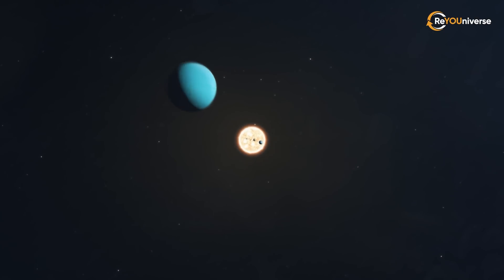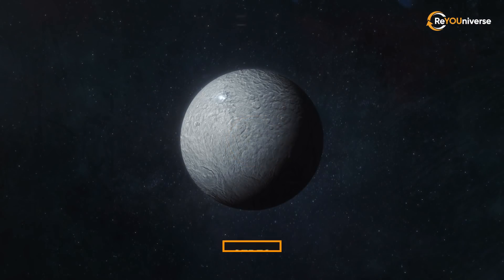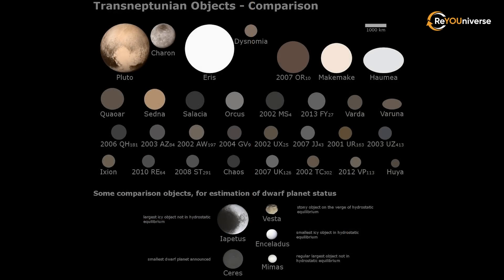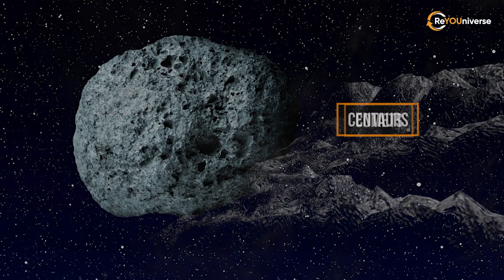It's also planned to observe small bodies of the solar system, such as Ceres, Pallas, the asteroid Ryugu, trans-Neptunian objects, centaurs, and several comets.